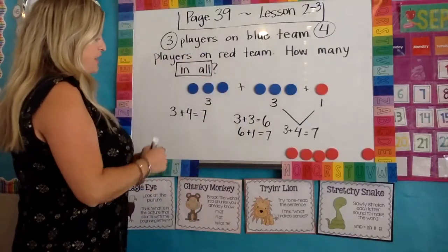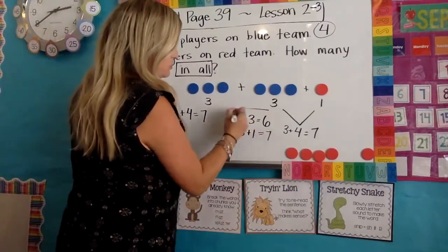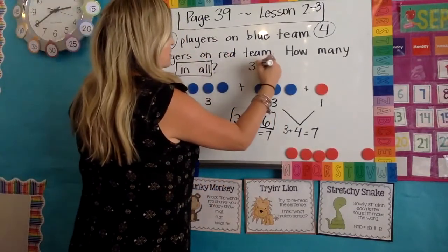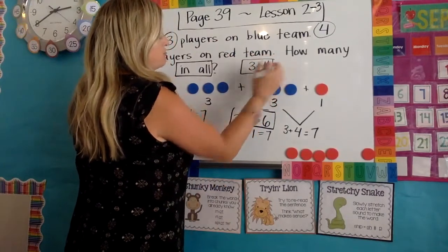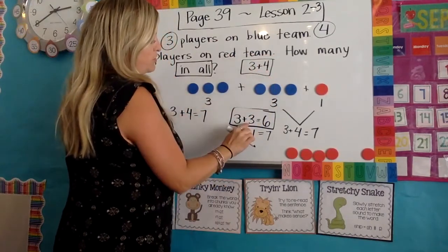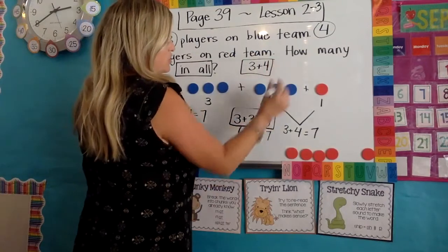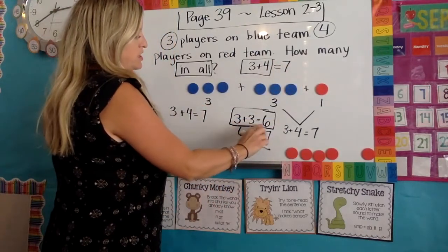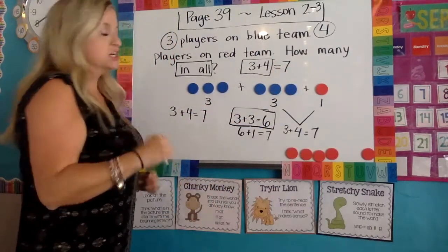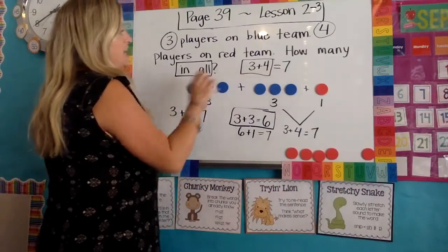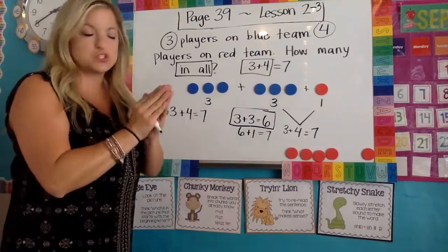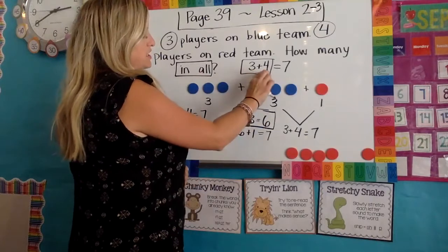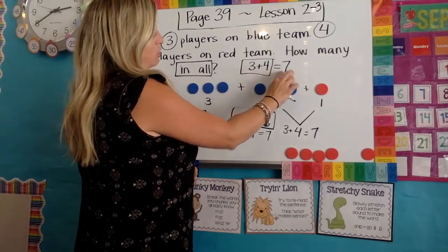If you know your doubles facts — which is three plus three equals six — you're solving three plus four. Well, three plus four: four is one more than three. So the answer must be one more than six, which is seven. So if you know three plus three equals six, which is a doubles fact, it will help you solve three plus four, which is a near double. That means it's close to it — it's not three plus three, it's just one more. So three plus three is six, but you're adding one here, so you add one there.